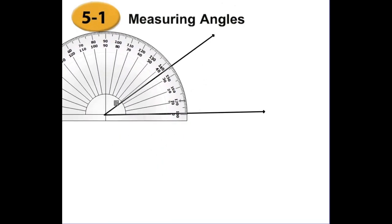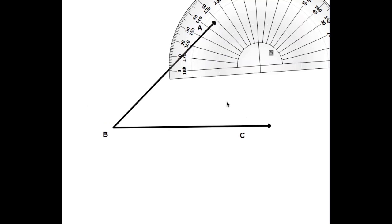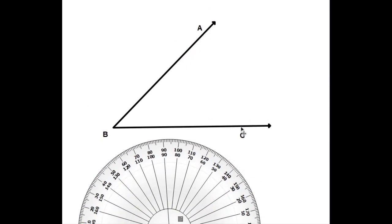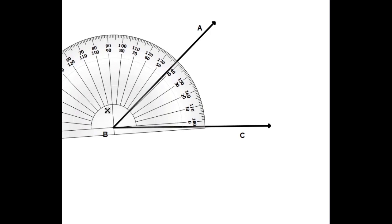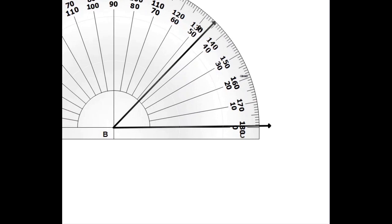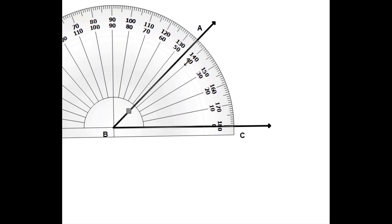Now let's measure some different angles. This is angle ABC — point A, point C, and the vertex is point B. The vertex must be at the middle letter. I place the center at B, align zero on the ray, and read: 10, 20, 30, 40, 45 degrees. So the measure of angle ABC equals 45 degrees.